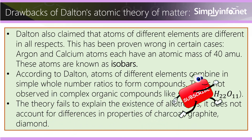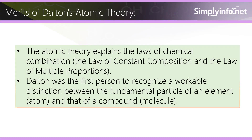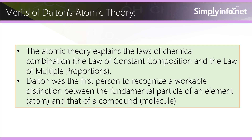The theory fails to explain the existence of allotropes. It does not account for differences in properties of charcoal, graphite, and diamond. Merits of Dalton's atomic theory: The atomic theory explains the laws of chemical combination, the law of constant composition, and the law of multiple proportions.